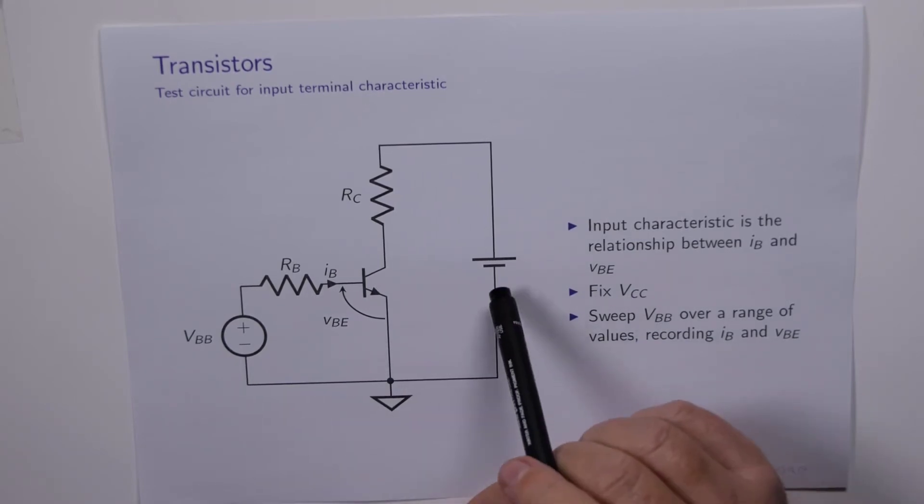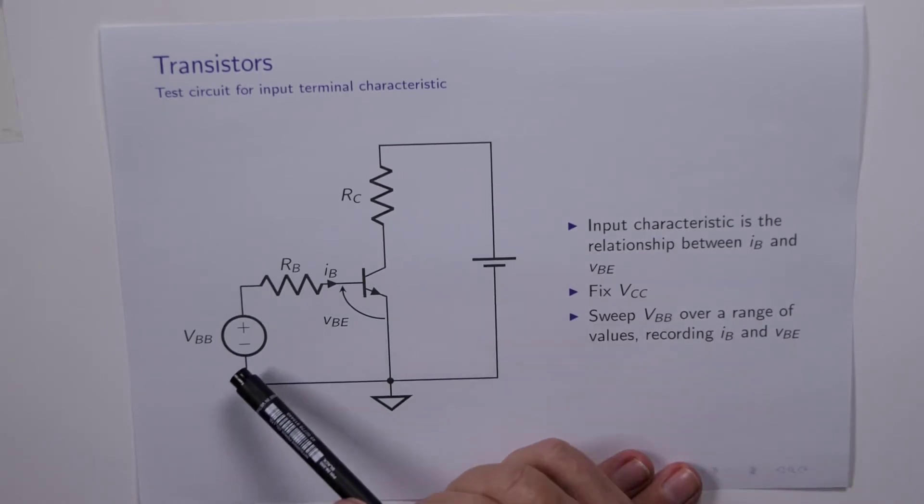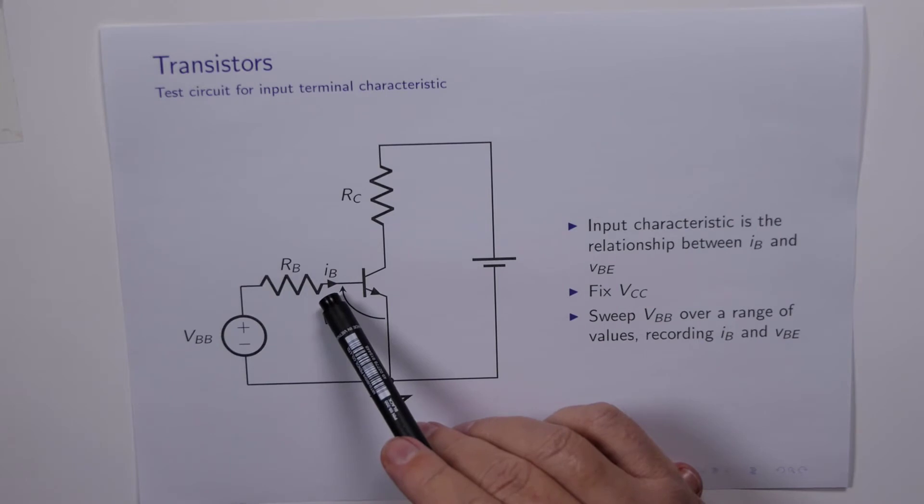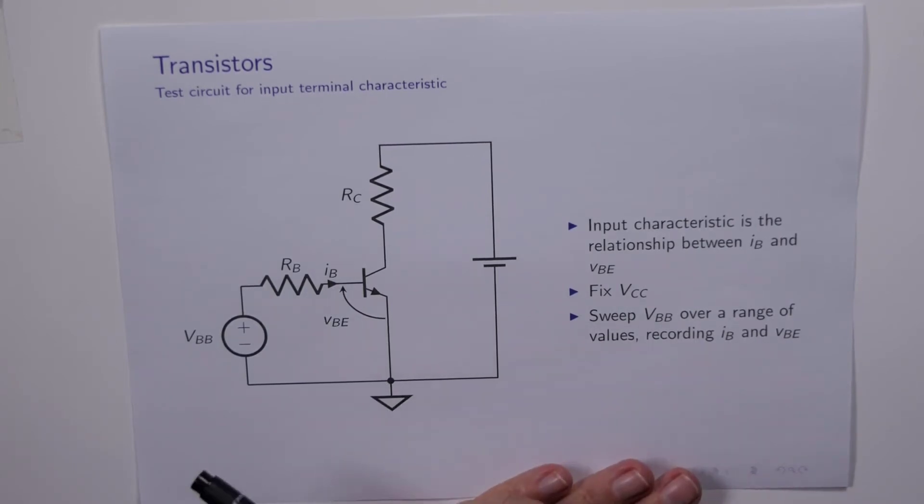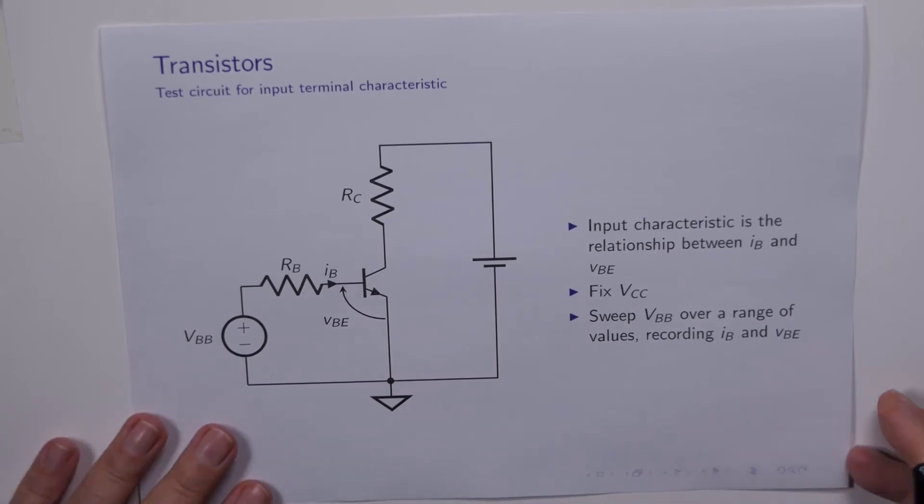So once we have fixed this voltage here VCC, we're now going to adjust VBB over a range of values and we'll be recording the base current and the base emitter voltage, and we'll be plotting it on a graph. So let's have a look at that.